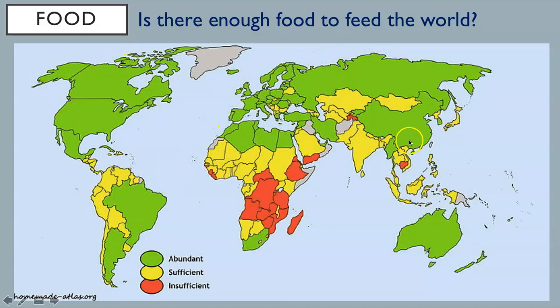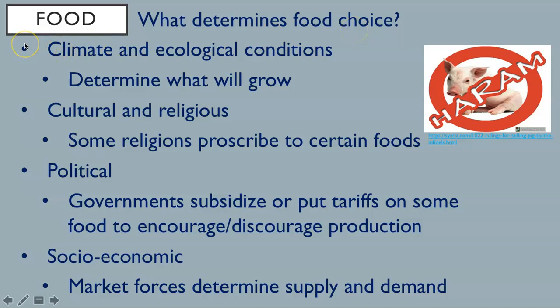What determines food choice? Climate and ecological conditions will determine what will grow. Humans adapt through irrigation and greenhouses to artificially alter climate, but most crops grow without this. Cultural and religious influences also play a role. Some religions prescribe certain foods — Islam and Judaism don't eat pork, and Hindus don't eat beef. Traditions determine what foods we prefer.